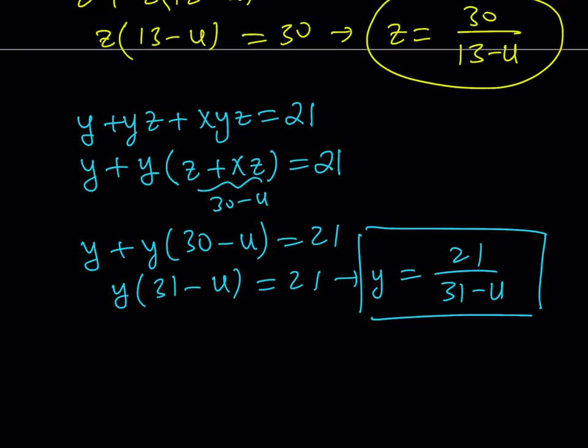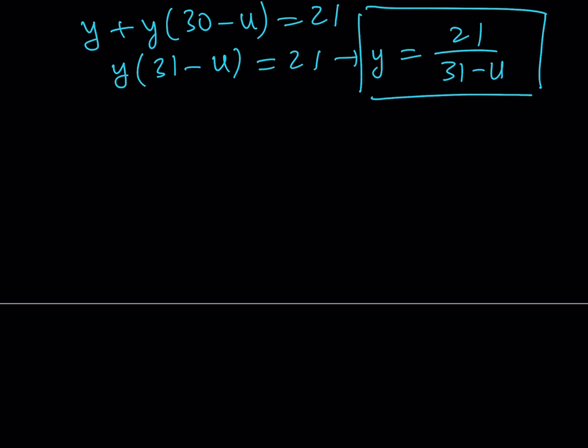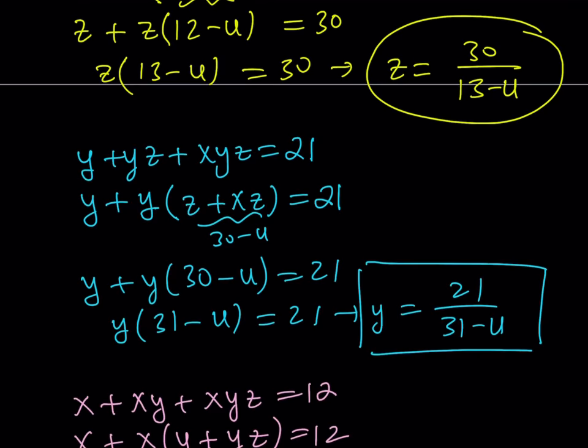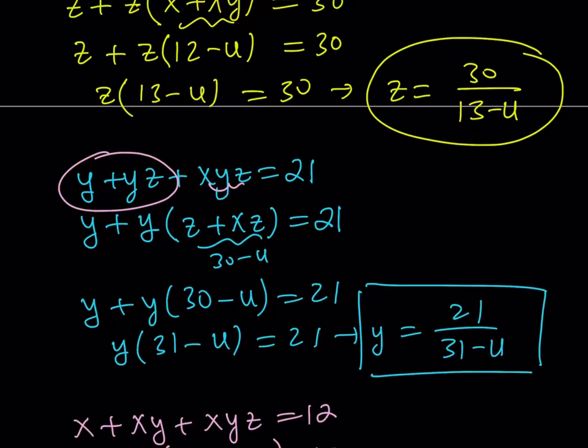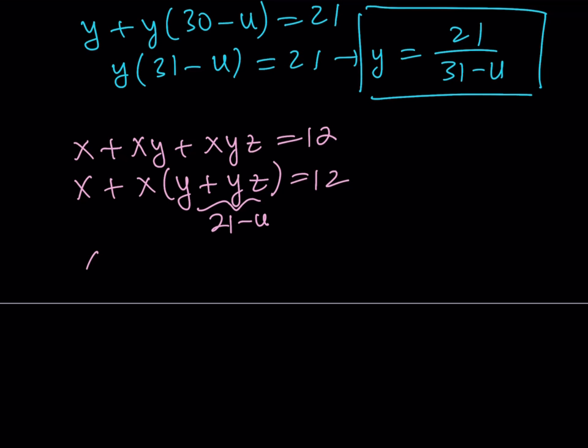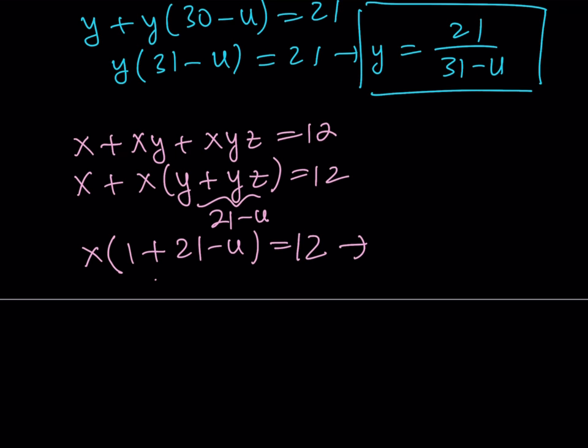So let's go ahead and do that. If you look at the first equation, you have x plus xy plus xyz is equal to 12. And if you factor out an x like before, y plus yz equals 12. And as you know, y plus yz, if you look at the second equation from here, this is u. y plus yz can be written as 21 minus u. And you can just write it as x times the quantity 1 plus 21 minus u equals 12. I guess this time I showed my work. And this becomes 22 minus u. And if you isolate x, it becomes 12 divided by 22 minus u. Great. So we were able to write x, y, and z, all of them in terms of u.